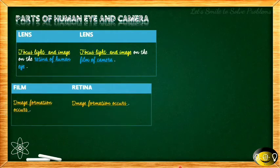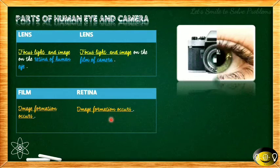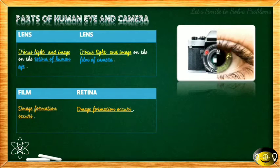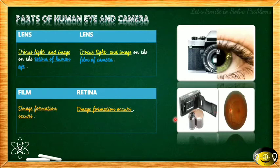Film and retina are similar in that image formation occurs in both. In the camera, this whole portion is the lens and the film is where image formation occurs. In the human eye, the retina is the corresponding portion where the image is formed.